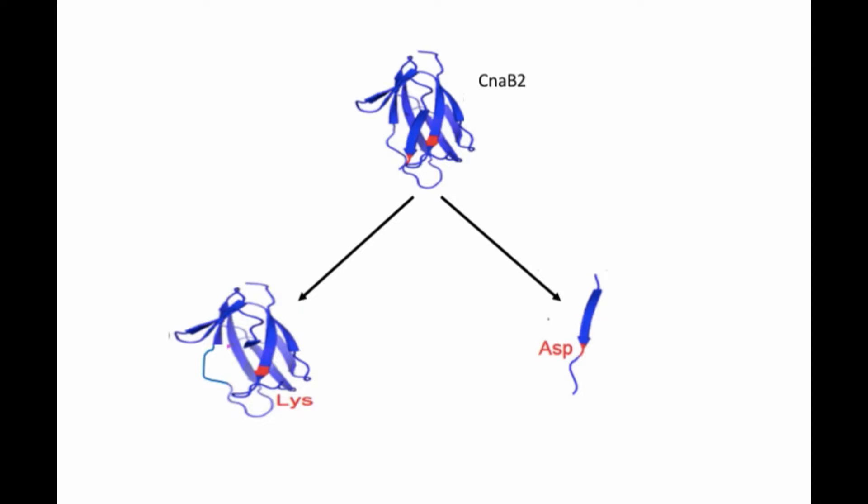The research team thought that this trait could be very useful in developing a new kind of peptide tag. So they identified where this peptide bond formed in the CNA-B2 domain and split it into a peptide tag containing 13 amino acid residues, named the SPI-TAG, and a second, 138 amino acid protein named the SPI-CATCHER.